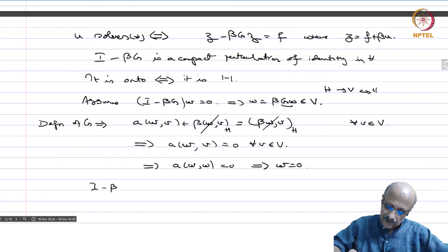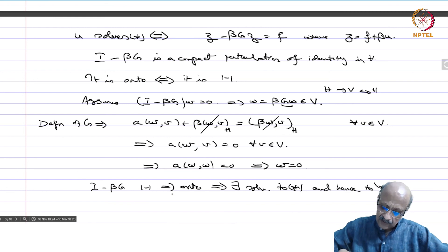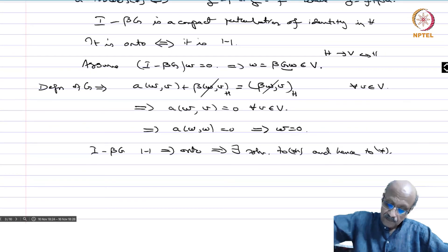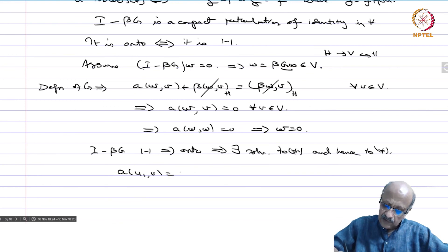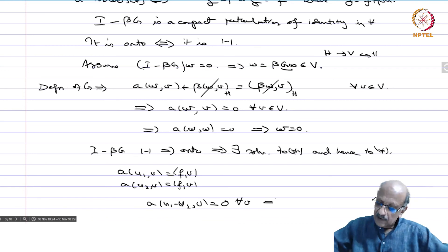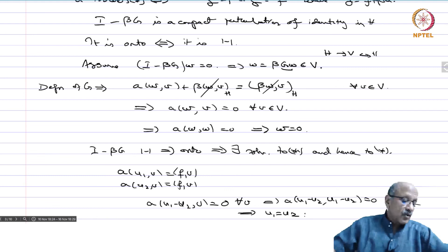Therefore, I - βG is one-to-one, which implies onto, which implies there exists a solution to double star and hence to star. Uniqueness is obvious because if you have two solutions A(u₁,v) = F(v) and A(u₂,v) = F(v), then A(u₁ - u₂, v) = 0 for all v. This implies A(u₁ - u₂, u₁ - u₂) = 0, therefore u₁ = u₂.